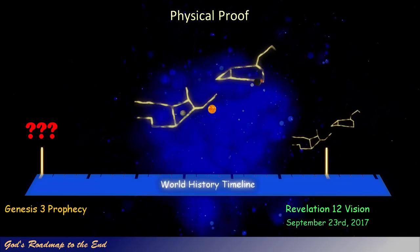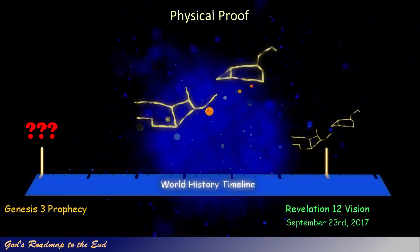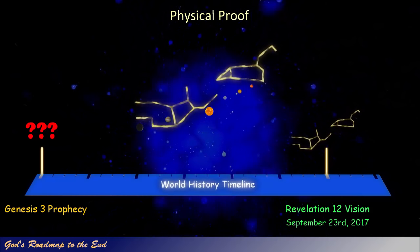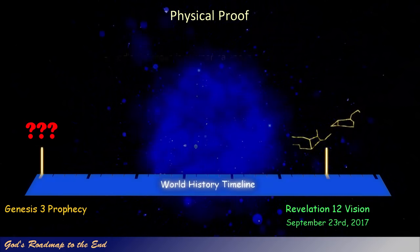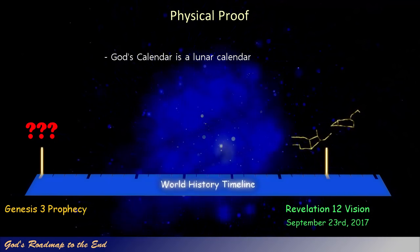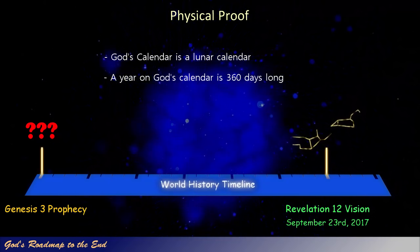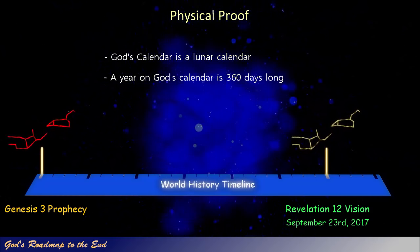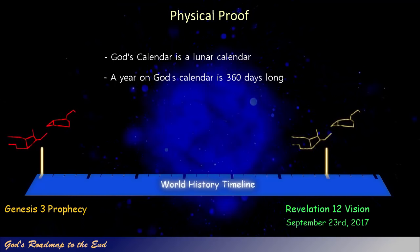Since no information is provided in the Bible between the creation of man and man falling into sin, it would be logical to conclude that the prophecy given by God in Genesis 3 must have occurred shortly after the creation narrative. When we look at time from God's perspective, we know that God uses a lunar calendar, and that a year in God's word is 360 days long. As I searched for this marker around 6,000 biblical years ago, I was amazed to find that God did indeed mark the prophecy with the same celestial configuration as described in Revelation 12.